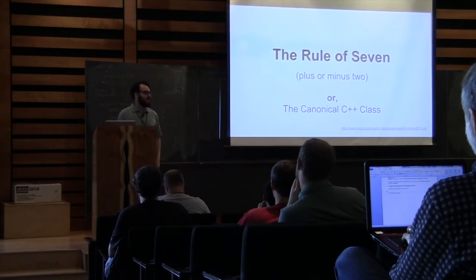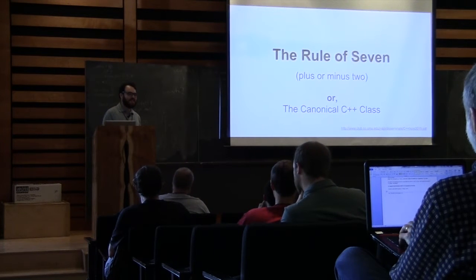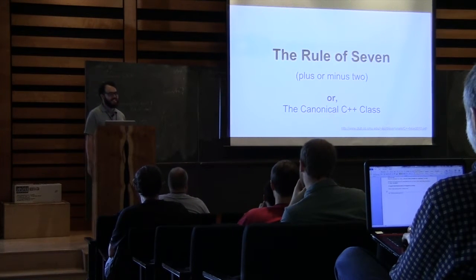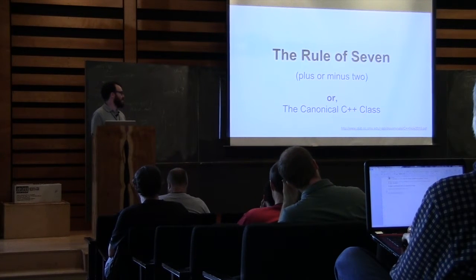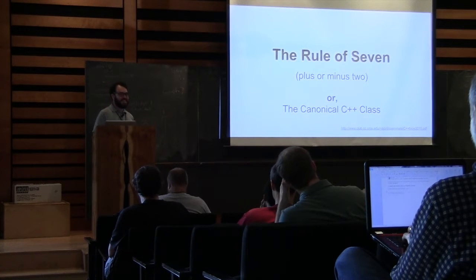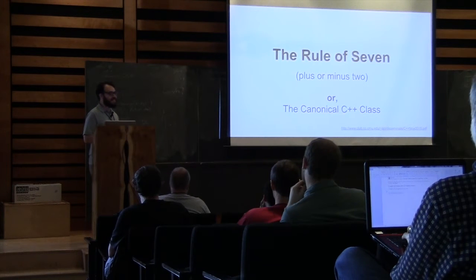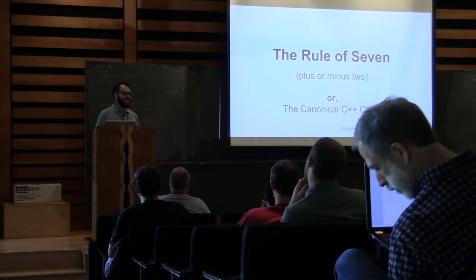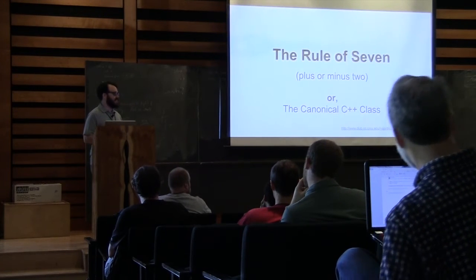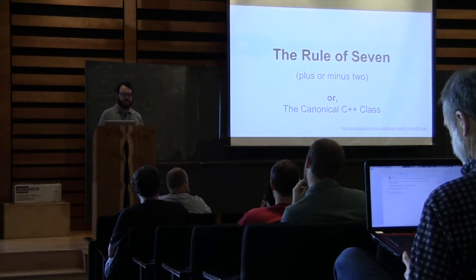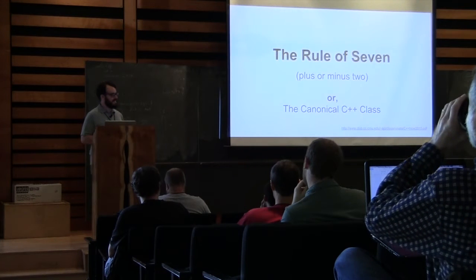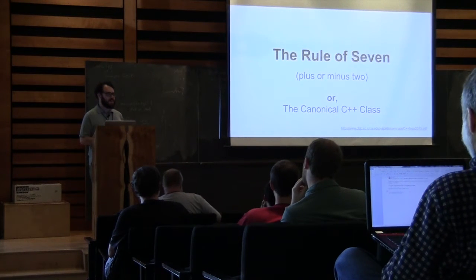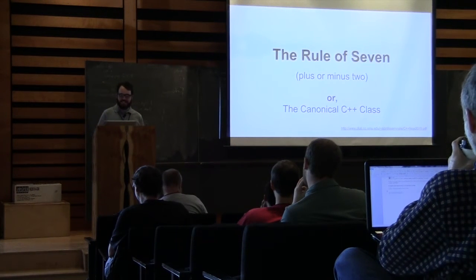Welcome everybody. I'm Arthur O'Dwyer. This talk is called 'The Rule of Seven Plus or Minus Two' because it's a catchy title. It's an allusion to the rule of three, the rule of five — things you've heard about before. There aren't really seven, certainly not seven plus two things you have to implement in a C++ class these days, but there are at least that many you have to consider. Situational awareness — be aware of what can go wrong so that you don't get into those situations.